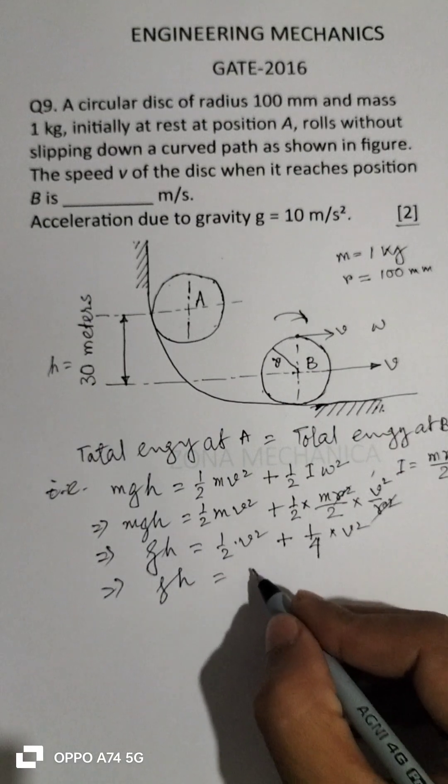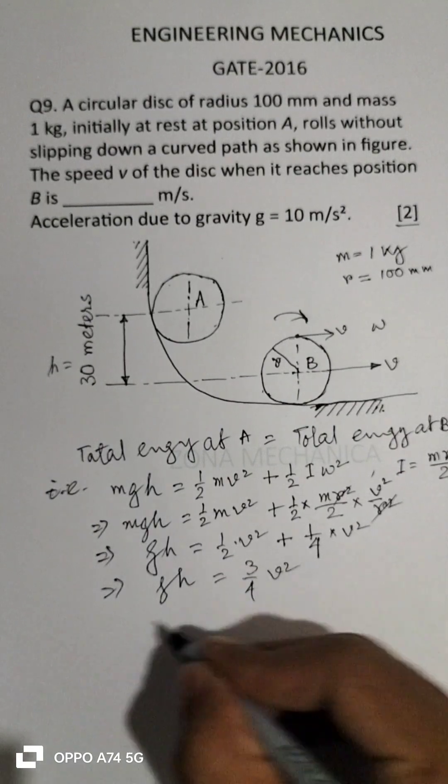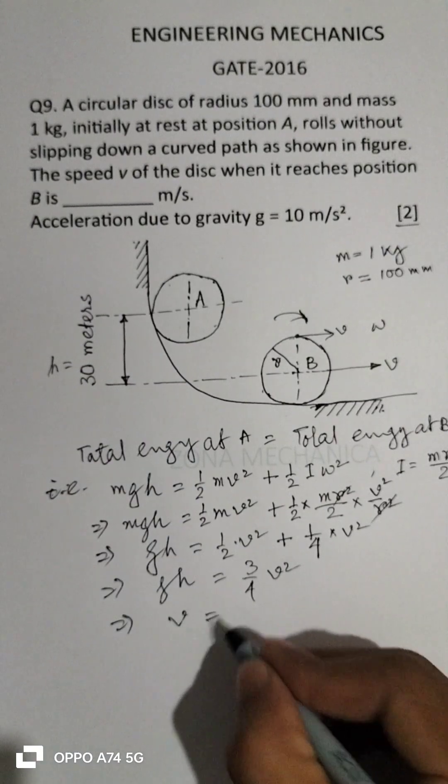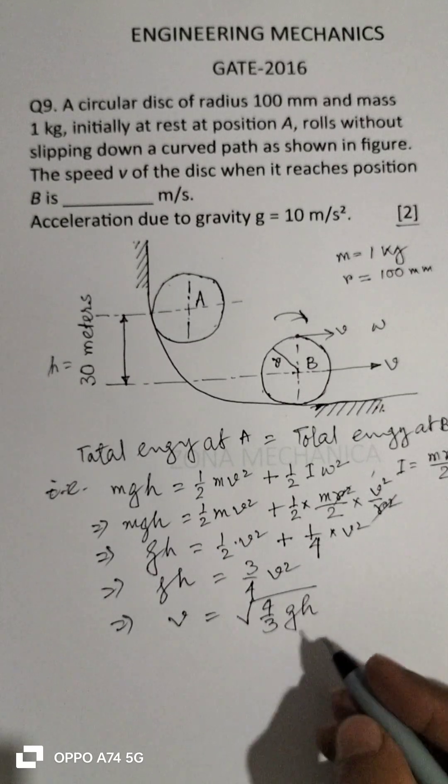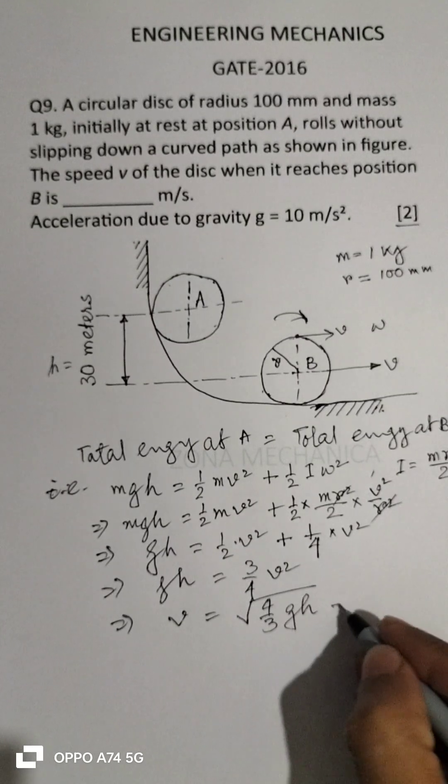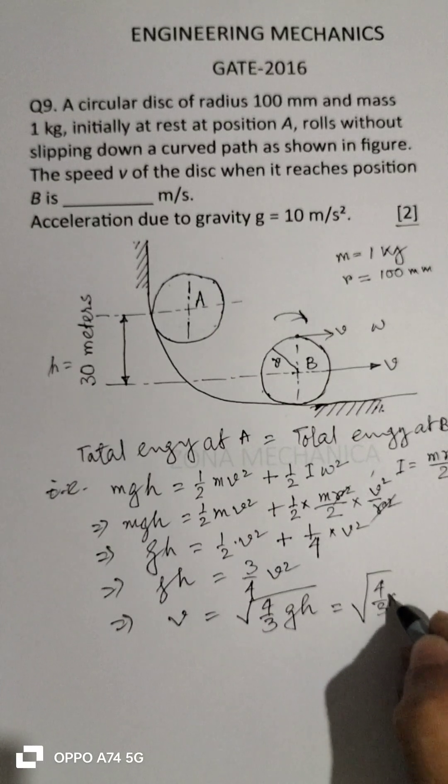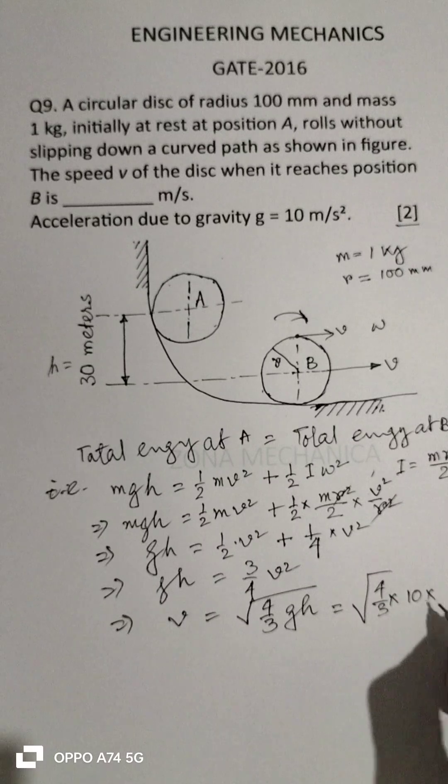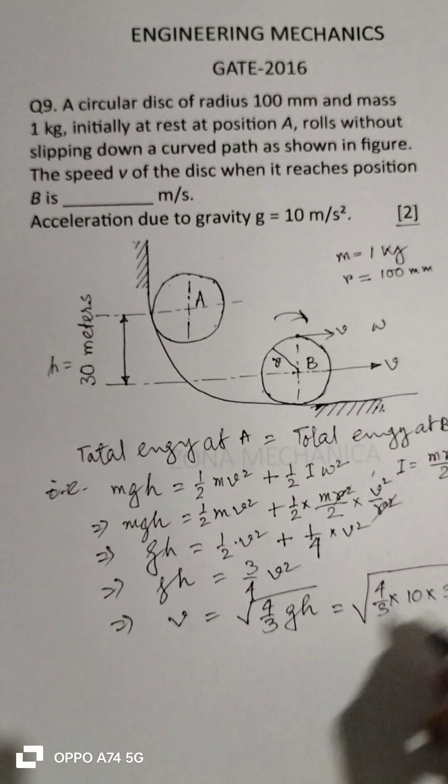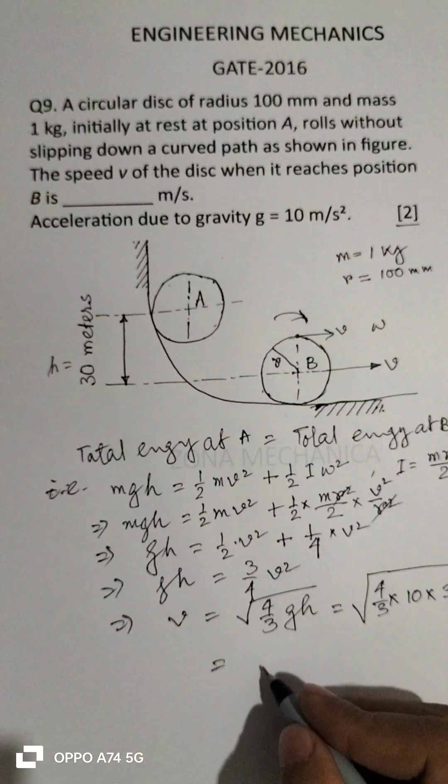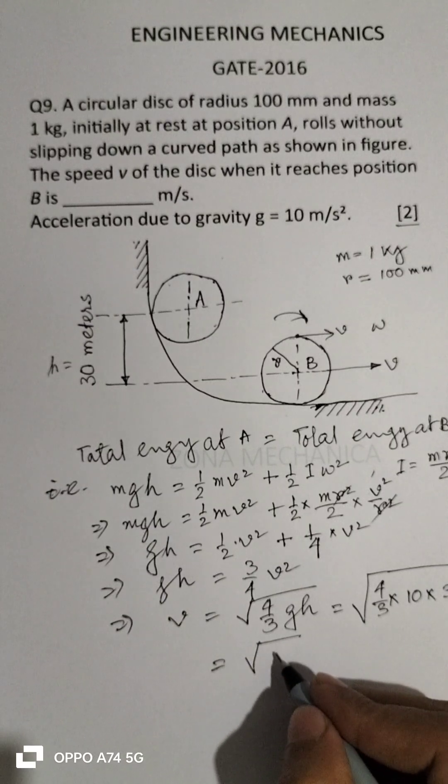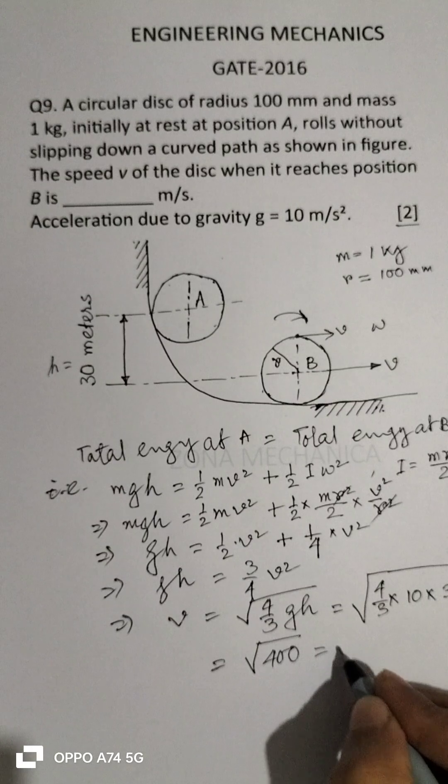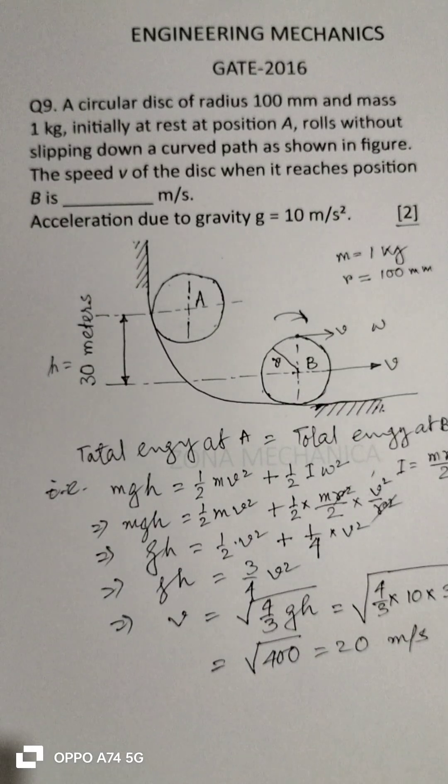That is gh equals ¾v², so v equals √(4gh/3). It is given that g is 10 m/s² and h equals 30. Upon solution, this is 400, that is 20 m/s.